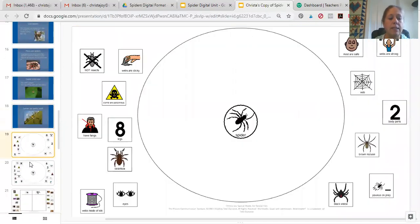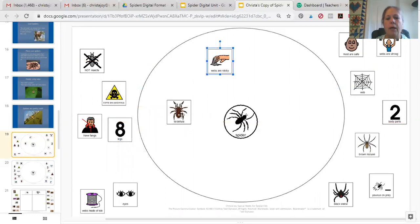Now the activities have several versions because I know you have lots of different learning levels. This first activity is a circle map and it is an errorless version, so all of these answers are correct and all students have to do is just move these images into the circle map to show different facts about spiders.